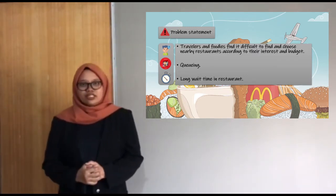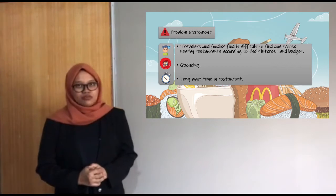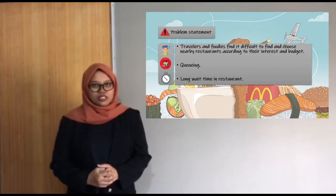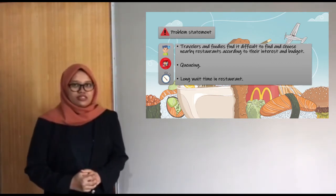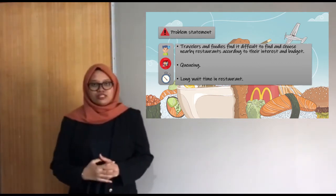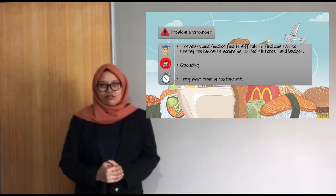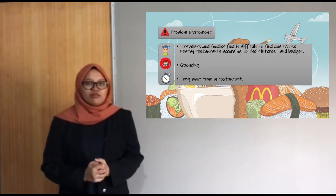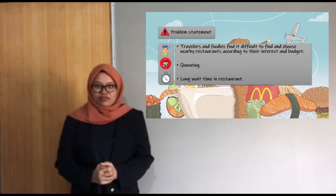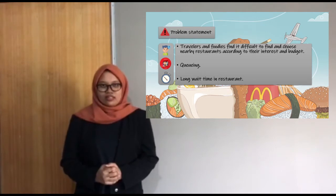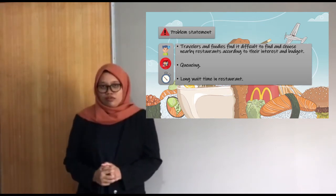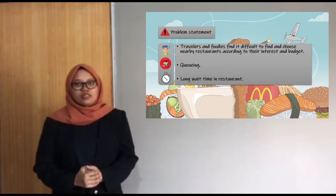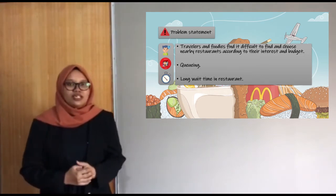For example, travellers and foodies find it difficult to find a nearby restaurant based on their interest and budget. On a survey conducted in 2019 on 130 people, it is stated that 78.5% of the respondents don't know where to go to eat when they are in a foreign area. The second problem is queuing.